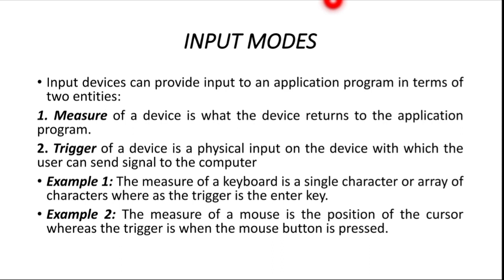Trigger of a device is a physical input on the device with which the user can send a signal to the computer. When a trigger occurs, a signal is sent to the computer. For example, when you press a key on the keyboard, the trigger occurs, and that tells the computer that this event has happened, that something has occurred.